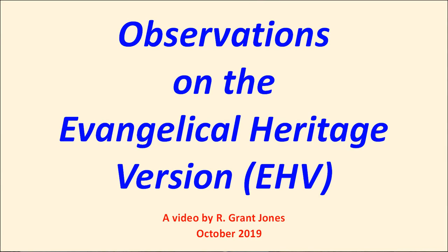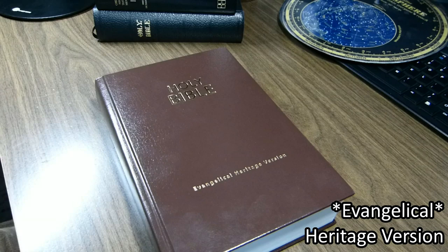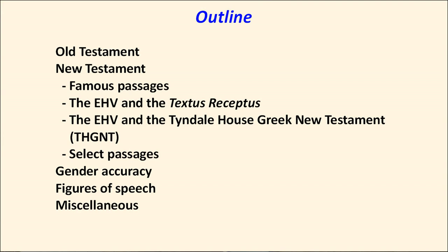Today we'll be doing a brief video concentrating on the textual basis of the English Heritage Version. In the Old Testament, we'll talk about the Dead Sea Scrolls and the Septuagint and the EHV's use of those. Then we'll move into the New Testament, with famous passages first: the longer ending of Mark, the story of the woman taken in adultery, and the Comma Johanneum. Then we'll look at the EHV in the Textus Receptus, the EHV in the Tyndale House Greek New Testament, and other passages of interest. The EHV says it's a gender-accurate translation — we'll compare that with the 2011 NIV and the New Revised Standard Version. The EHV also says it tries not to drain the translation of interest by removing figures of speech, so we'll look at a few of those, and then some miscellaneous observations.